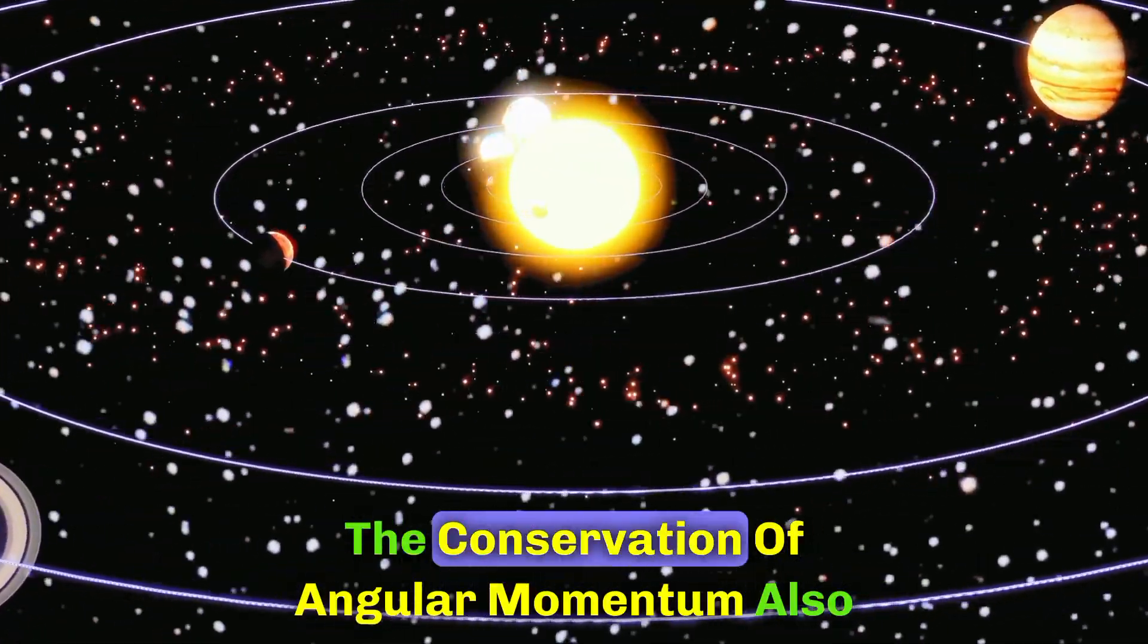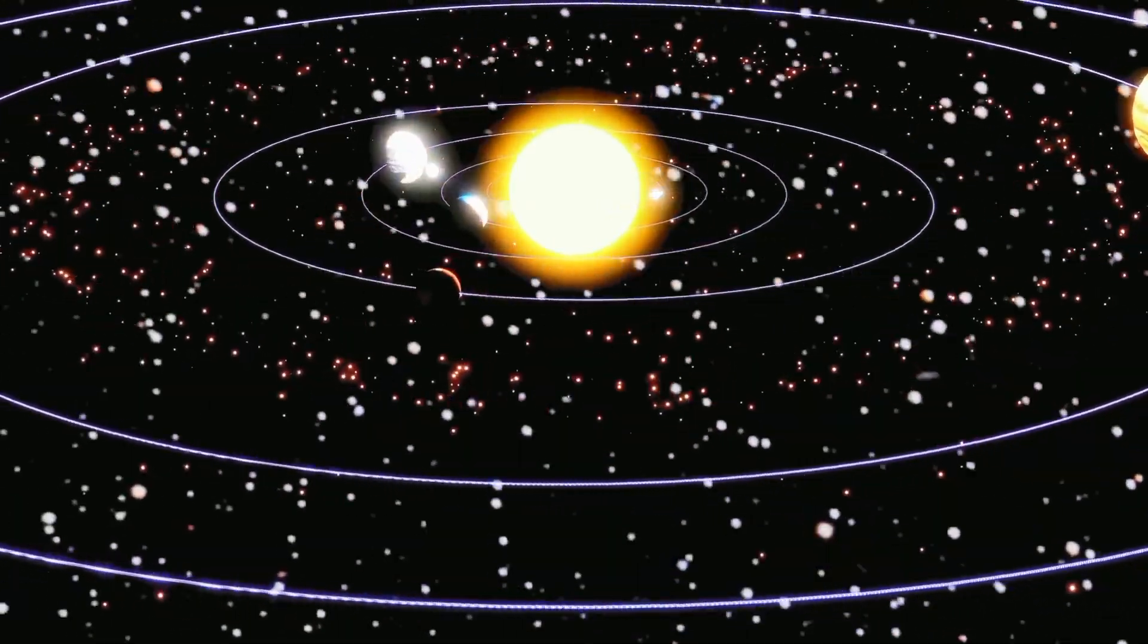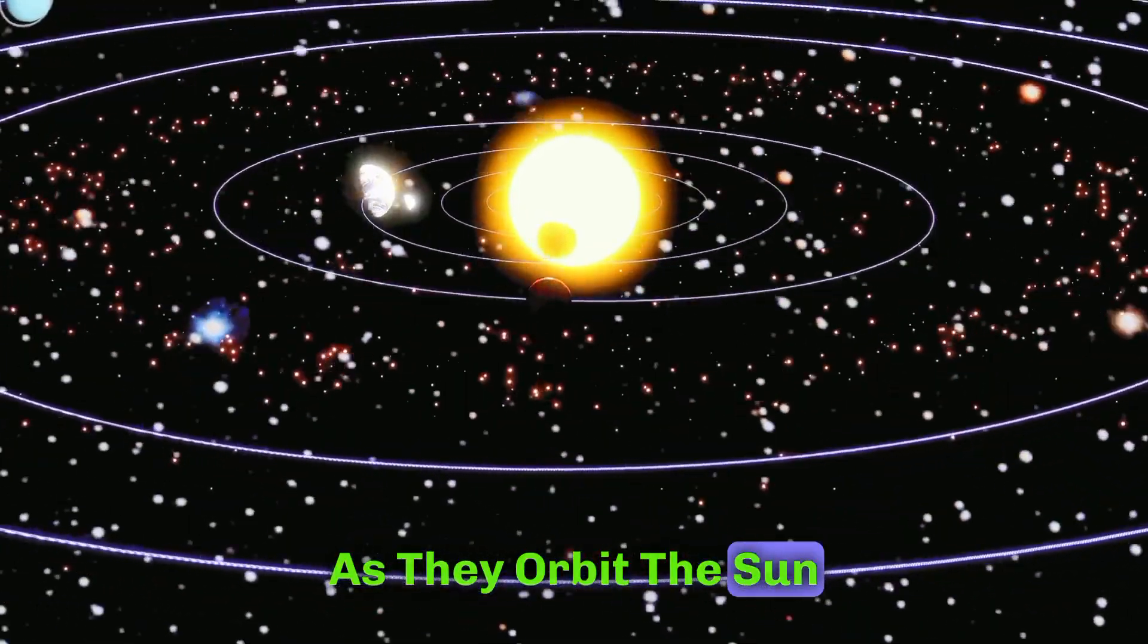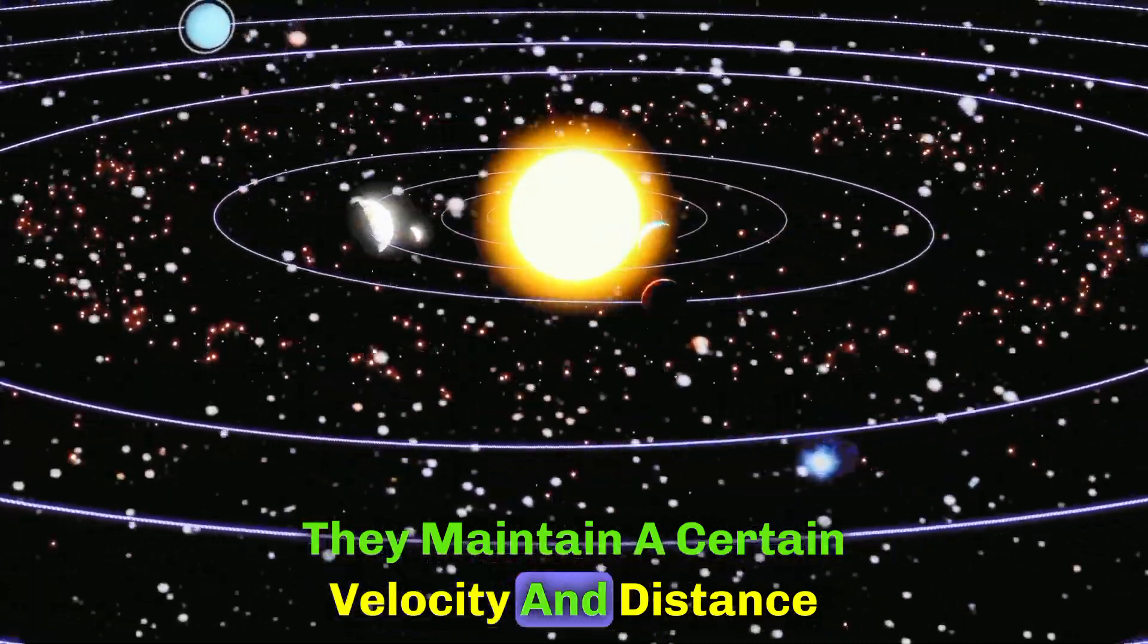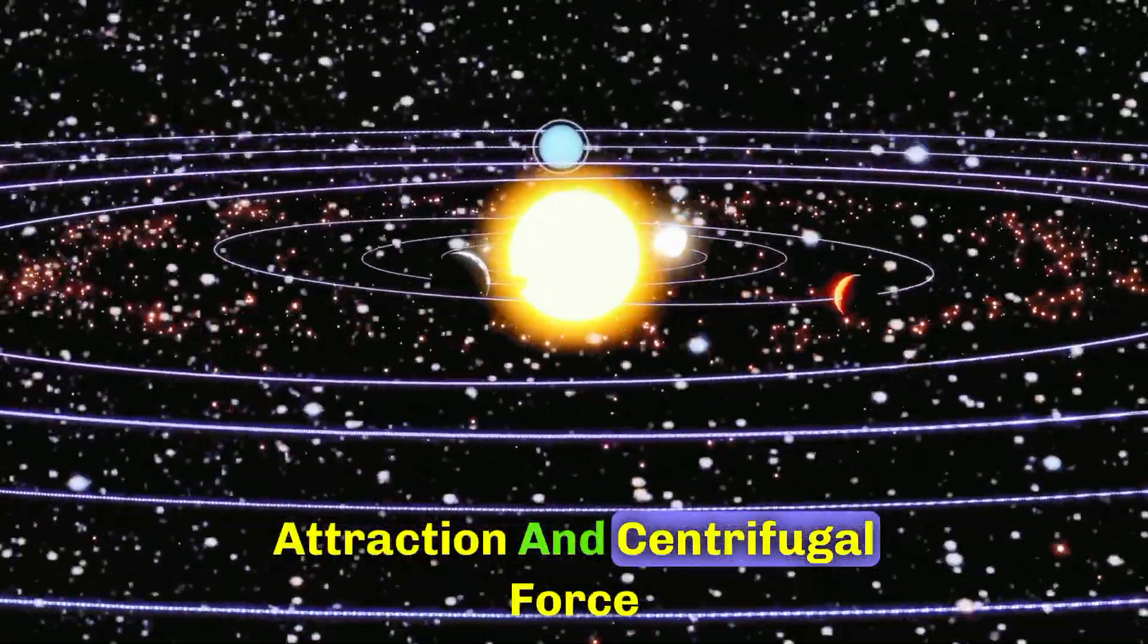Additionally, the conservation of angular momentum also plays a role in keeping planets in their orbits. As they orbit the Sun, they maintain a certain velocity and distance, maintaining a balance between gravitational attraction and centrifugal force.